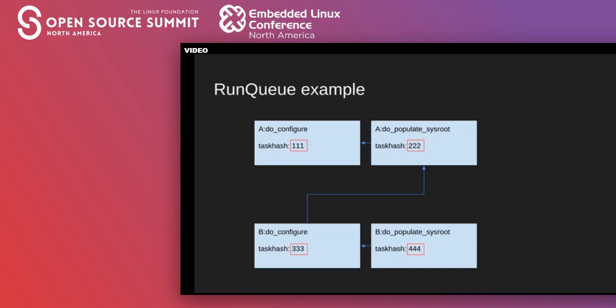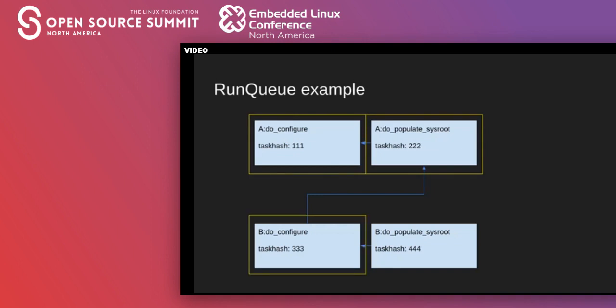Simplified task hashes are shown for each task. The task hash is a hash that includes all the metadata the task requires, such as the task BitBake variables and task code, as well as the task hash values for each dependent task. So, for example, the task hash value 222 for A DoPopulateSysRoot depends on the task hash value 111 from A DoConfigure. When given a configuration like this, BitBake will execute the tasks sequentially in dependency order: A DoConfigure, A DoPopulateSysRoot, B DoConfigure, B DoPopulateSysRoot.